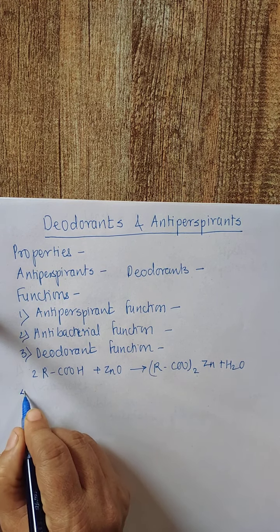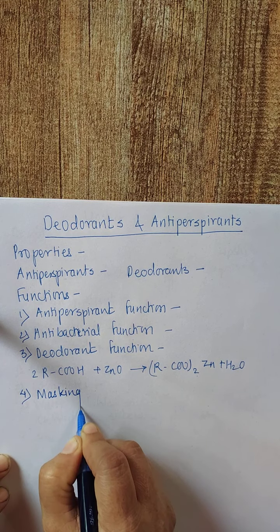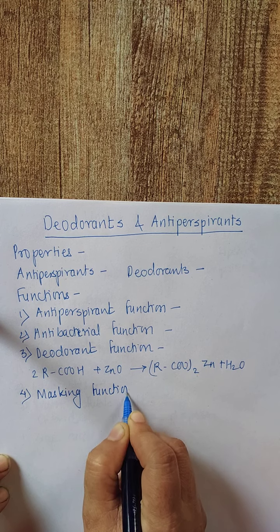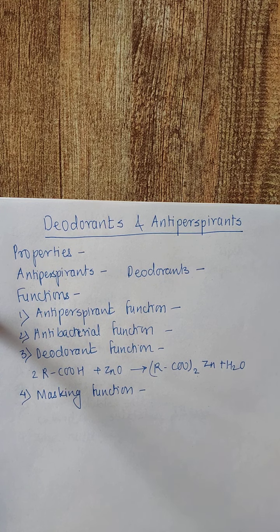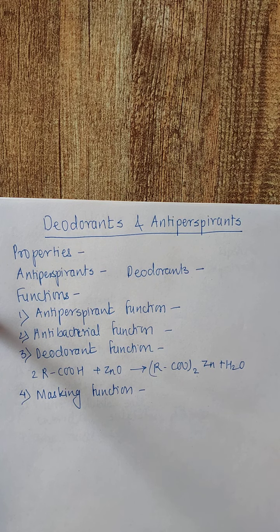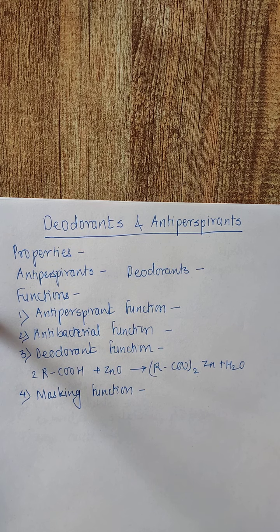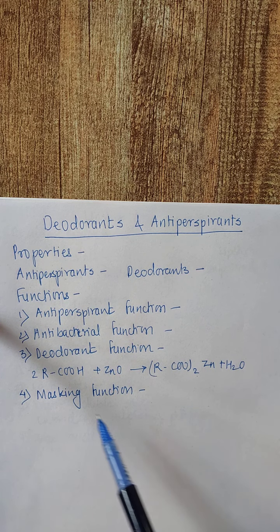The fourth function is the masking function: unpleasant body odor is covered with fragrance. When the body odor is not strong, it can be masked with perfume or eau de cologne. There are two types of cologne, including deodorant cologne, which achieves a stronger deodorant effect through the addition of antibacterial agents.